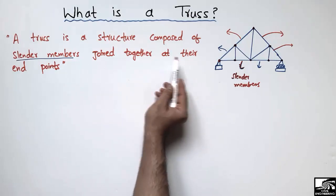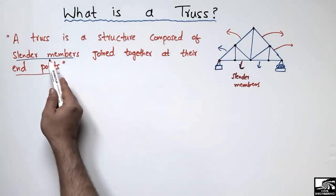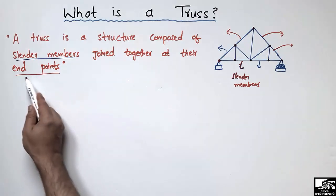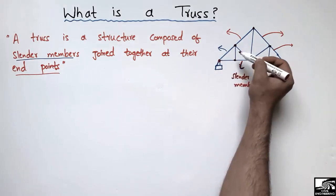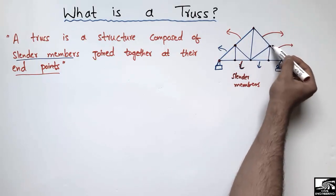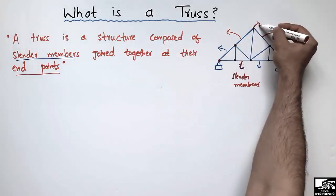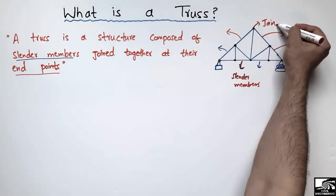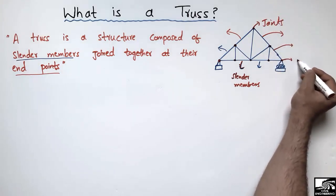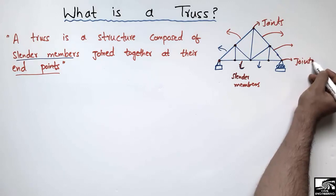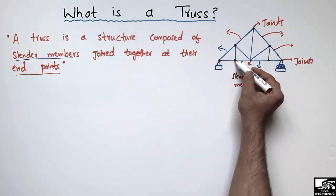These slender members are joined together only at their end points. These end points are also called joints or nodes. So all of these connection points are the joints of the truss.